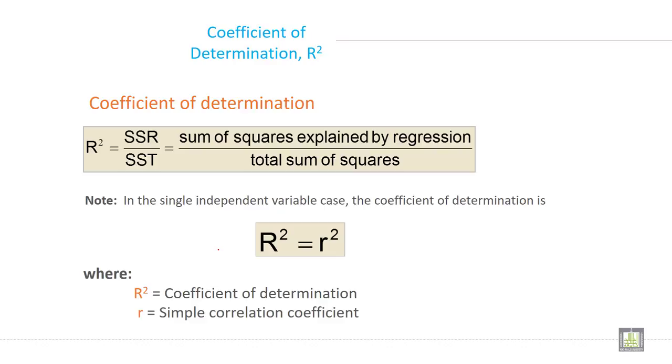Now coefficient of determination, R² is SSR divided by SST. What does it mean? It means sum of squares explained by regression divided by total sum of squares.